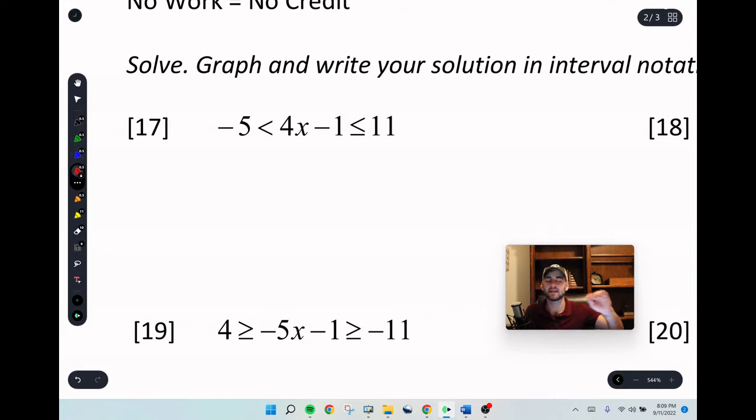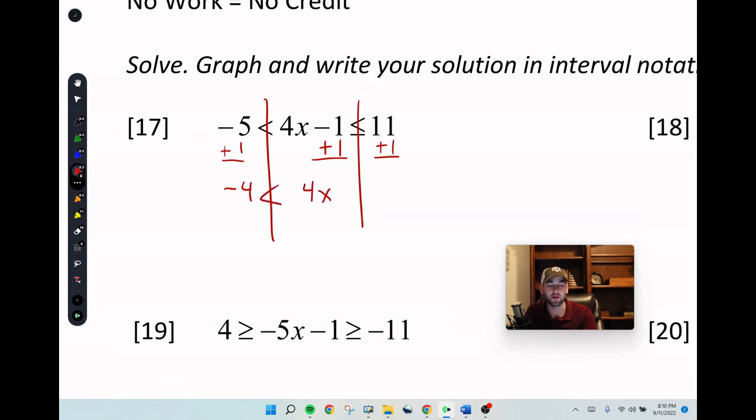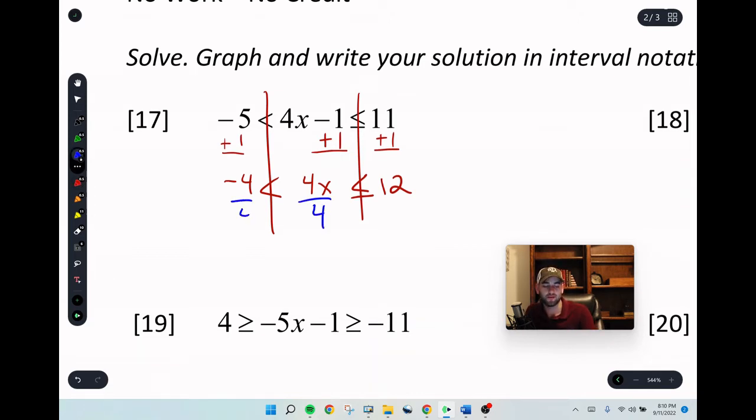So we solve these problems exactly like we solve other problems. What you do to one side of the equal sign, you have to do to the other side. So just like when we're doing regular problems, what you do to one side, you have to do to the other side. So we need to get x by itself. We're going to go plus 1, plus 1, plus 1. Not too crazy. So now we're left with negative 4, 4x. Same signs, leave the signs alone. There's only one special case for the signs, which we will see. Less than or equal to 12. Then just like the other types of problems, we're going to divide by 4, divide by 4, divide by 4. End up with negative 1 less than x, less than or equal to 3.